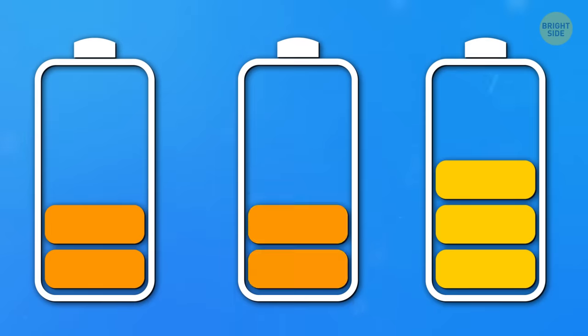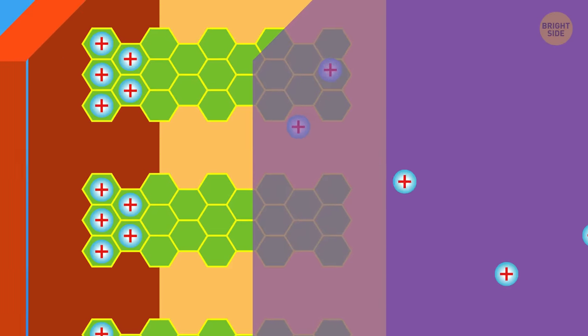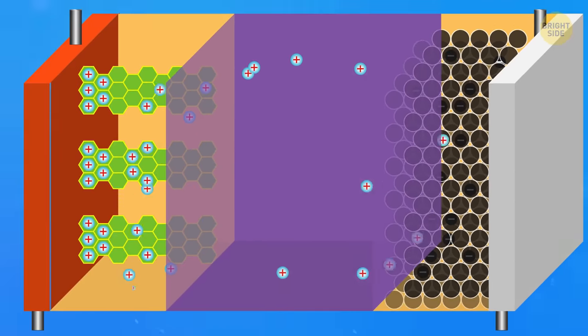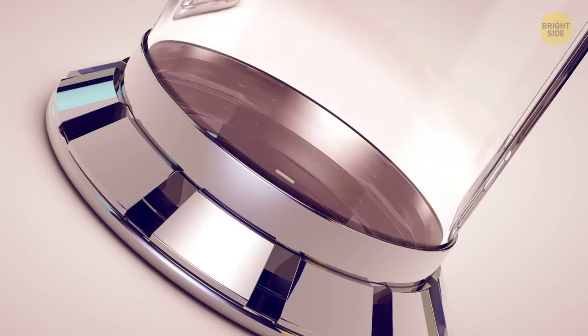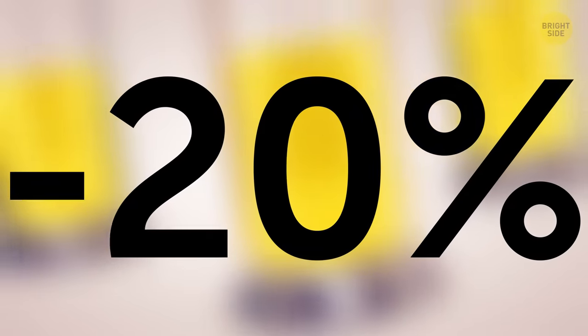But did you know that you are shortening your battery life whenever you use it? Batteries work by using electricity to cause a chemical reaction inside the battery itself. Charging too quickly makes the process less efficient. This can reduce the amount of storable energy by as much as 20% for the rest of that charging cycle.